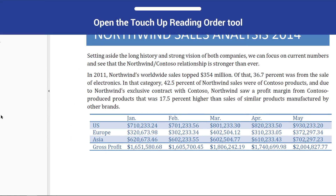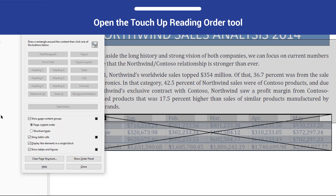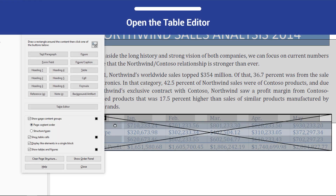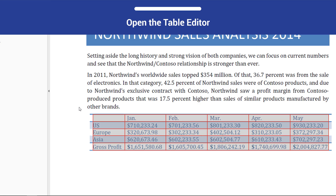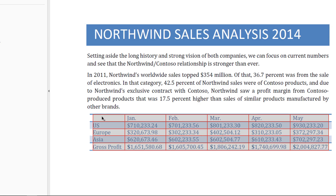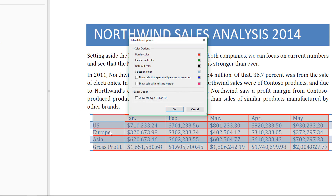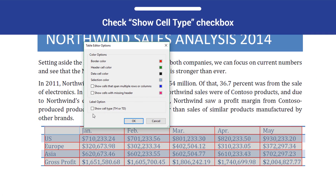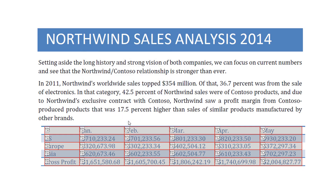To repair this issue, open the TouchUp Reading Order tool by pressing Shift plus Ctrl plus U. Select the table and then select Table Editor from the TouchUp Reading Order tool. Open the context menu on the table and select Table Editor Options. In the dialog that appears, put a check in the Show Cell Type checkbox and then select OK.